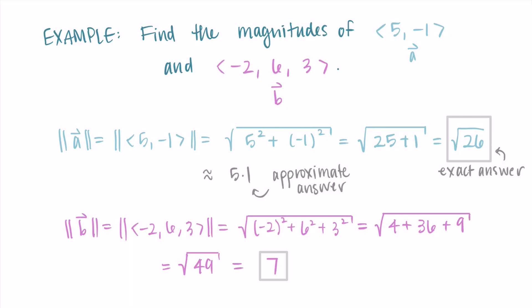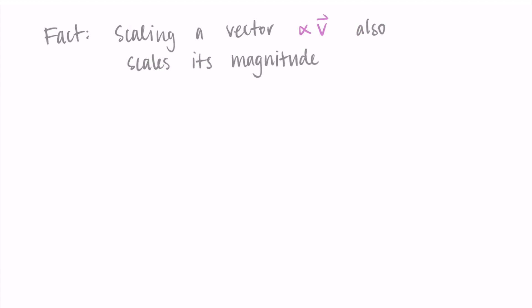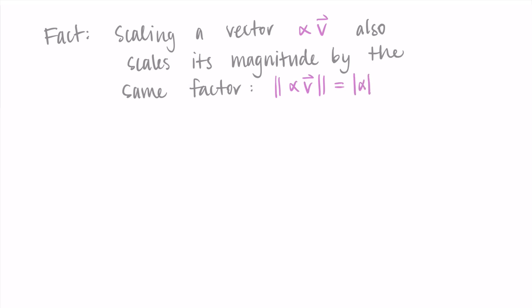These computations aren't too difficult — it just involves assembling the information correctly and getting the square root at the end. There are some other things we do with magnitude to give us more information. A fact I want to prove is that scaling a vector — say alpha times a vector v — also scales its magnitude by the same factor. The magnitude of alpha times v equals the absolute value of alpha times the magnitude of v.